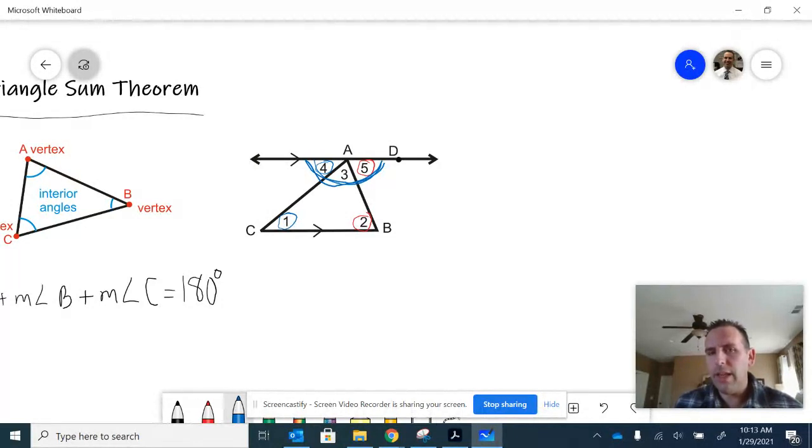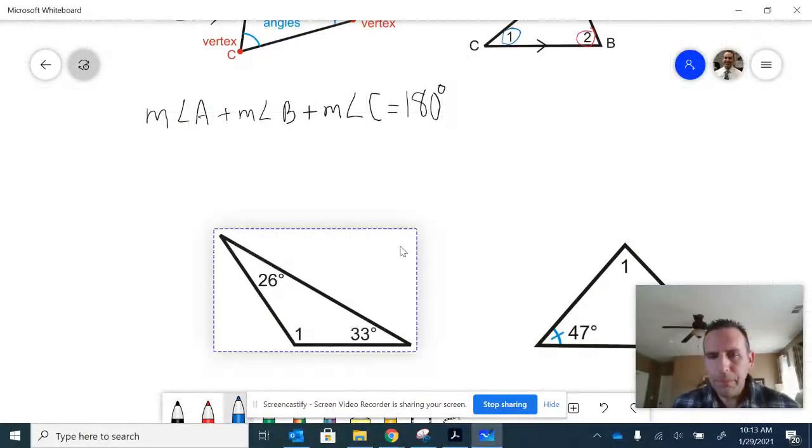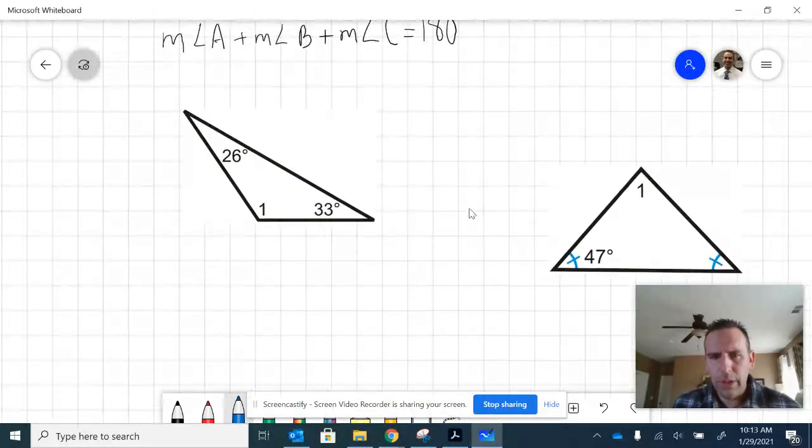So the conclusion is angles 4, 3, and 5 add up to 180. Thus, angles 1, 2, and 3 add up to 180 because of the relationship of 1 being the same as 4 and 2 being the same as 5. That's an informal proof of this theorem. Now, let's see it in practical use with a couple examples.